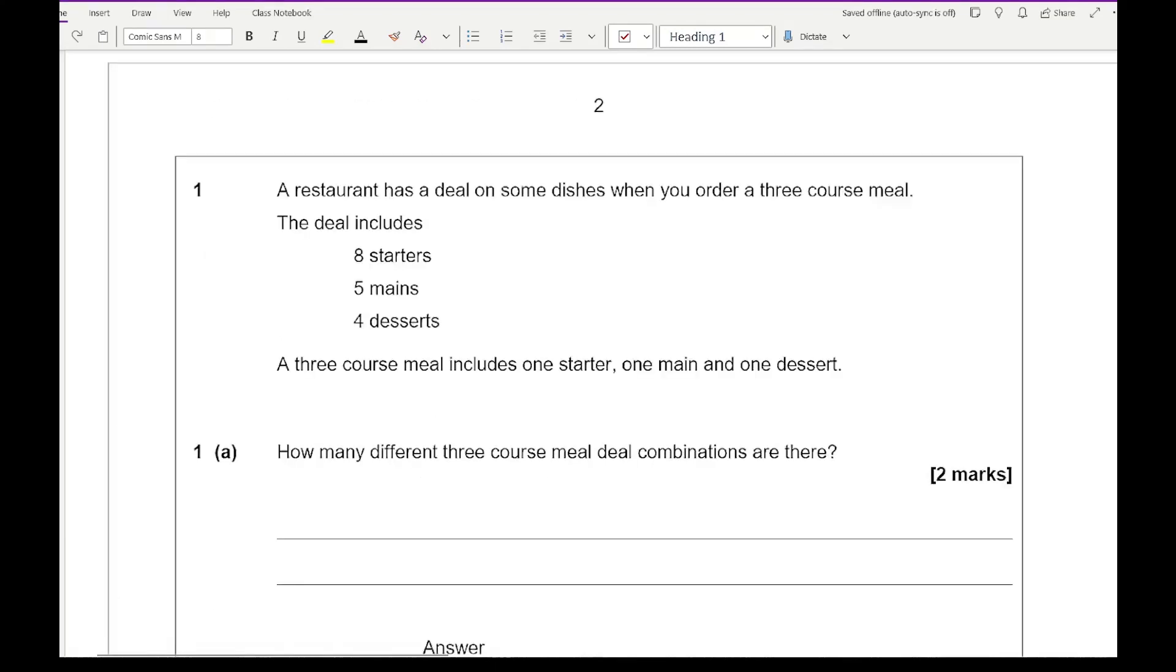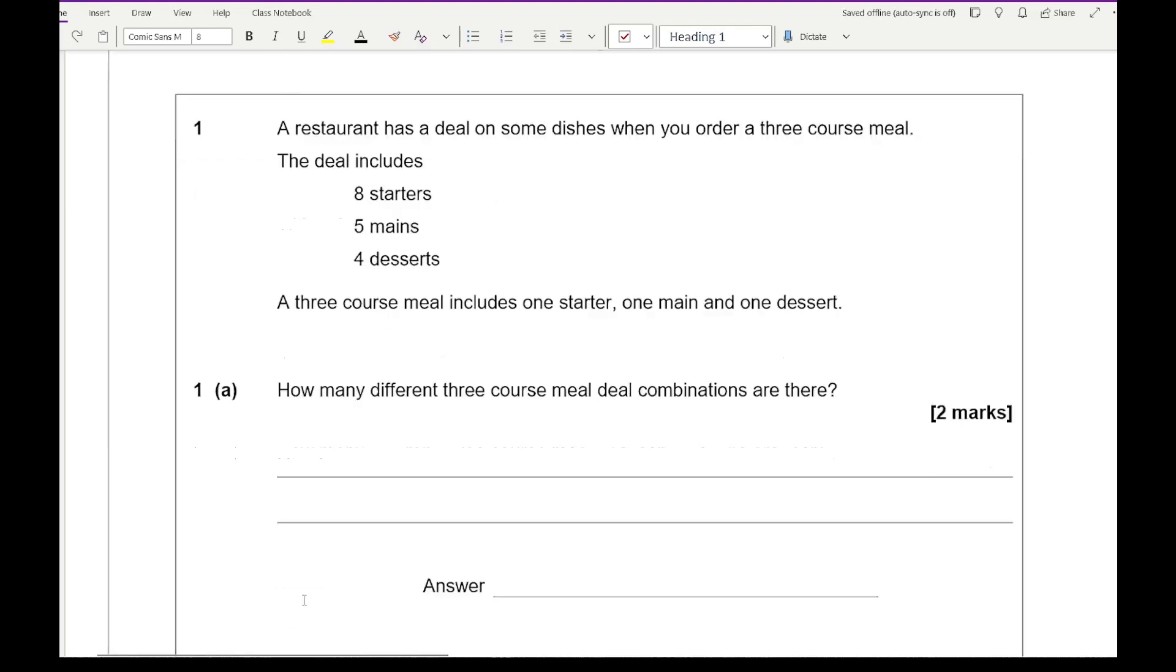Without further ado, let's get started on some exam questions. Little reminder, if you want access to these questions, just click on the link in the description. Looking at question 1, it says the restaurant has a deal on some dishes when you order a 3 course meal. The deal includes 8 starters, 5 mains and 4 desserts. A 3 course meal includes 1 starter, 1 main and 1 dessert. How many different 3 course meal deal combinations are there?